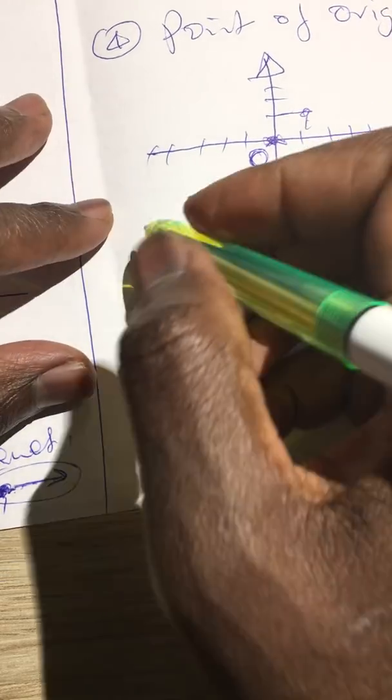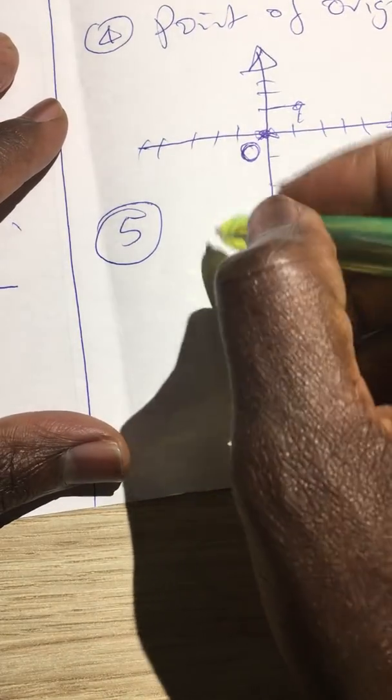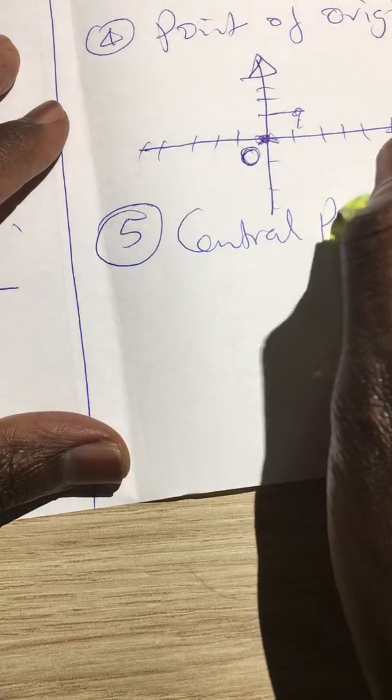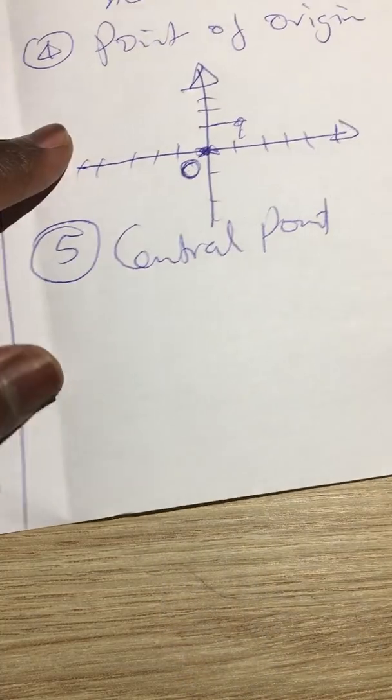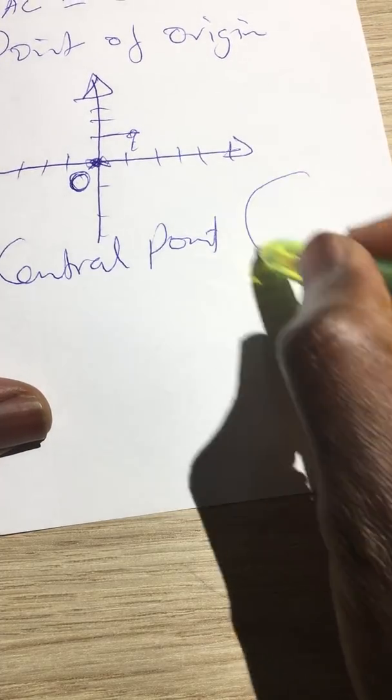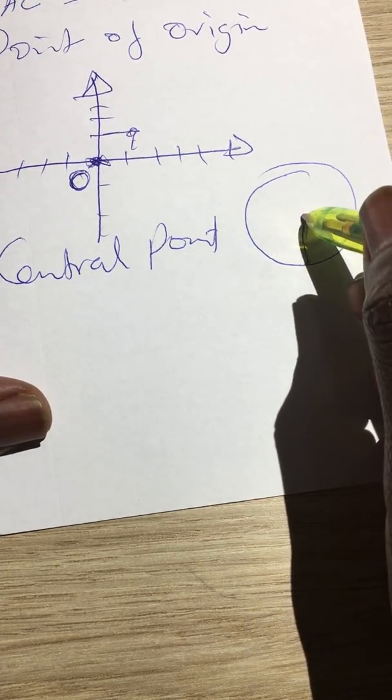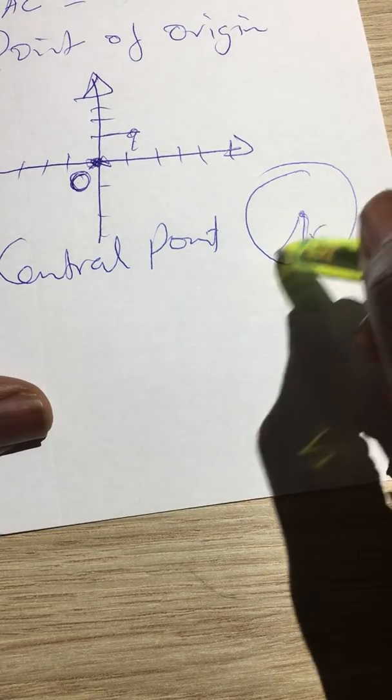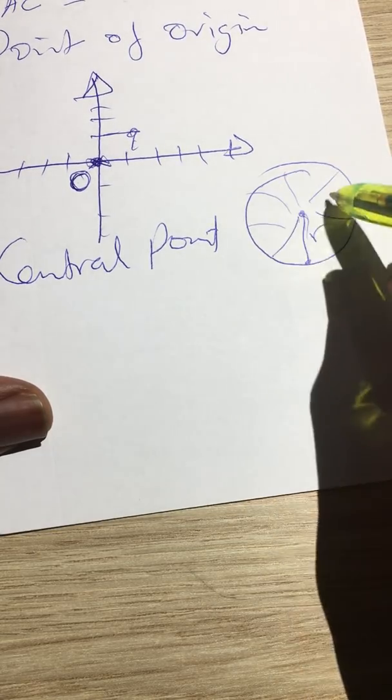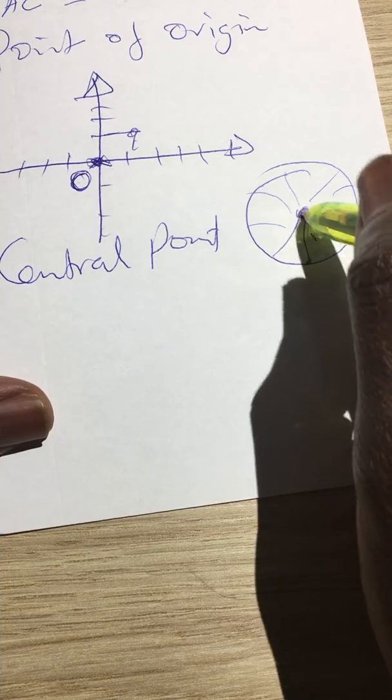Another type of point that you can look at is the central point. Central point comes from the circle. You have the radius from the circumference to the center of the circle, and if you have many radii, all of them will come from the center, and that center there is our central point.